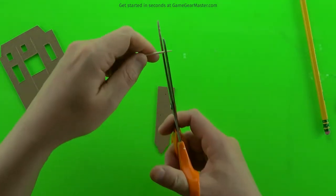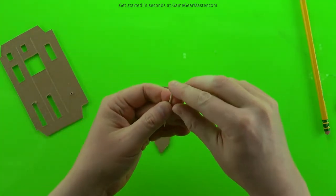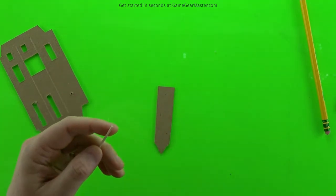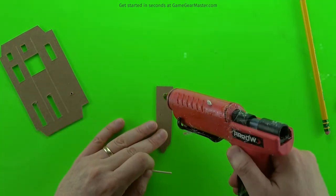And now we need to prep our toothpick. We want to take that sharp edge off because we want to have a flat edge to glue onto the decorator. Then we just hot glue it onto our mark.